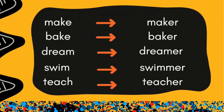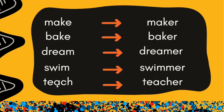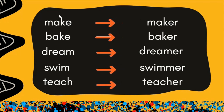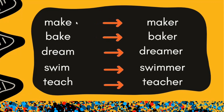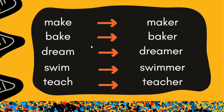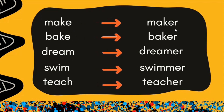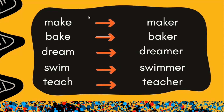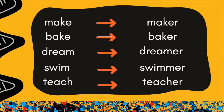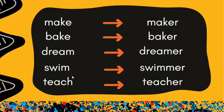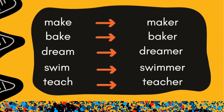You can also make an educated guess. If the word you are adding the ER ending to is a simple verb like make, bake, dream, swim, or teach — go for ER. Make will be maker. Bake will be baker. Dream will be dreamer. Swim will be swimmer. And teach will be teacher. These are simple verbs that are changing to agent nouns.